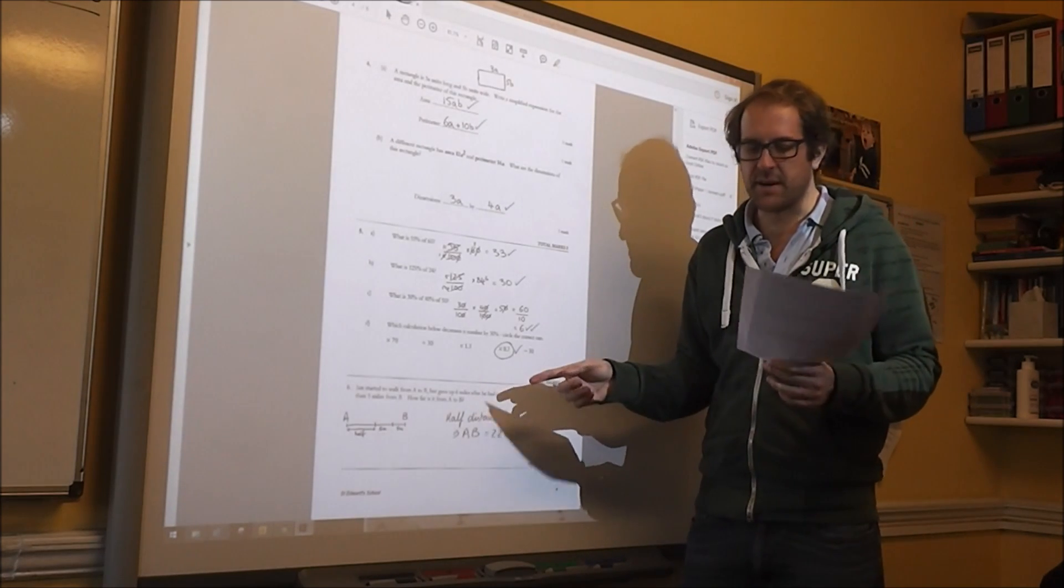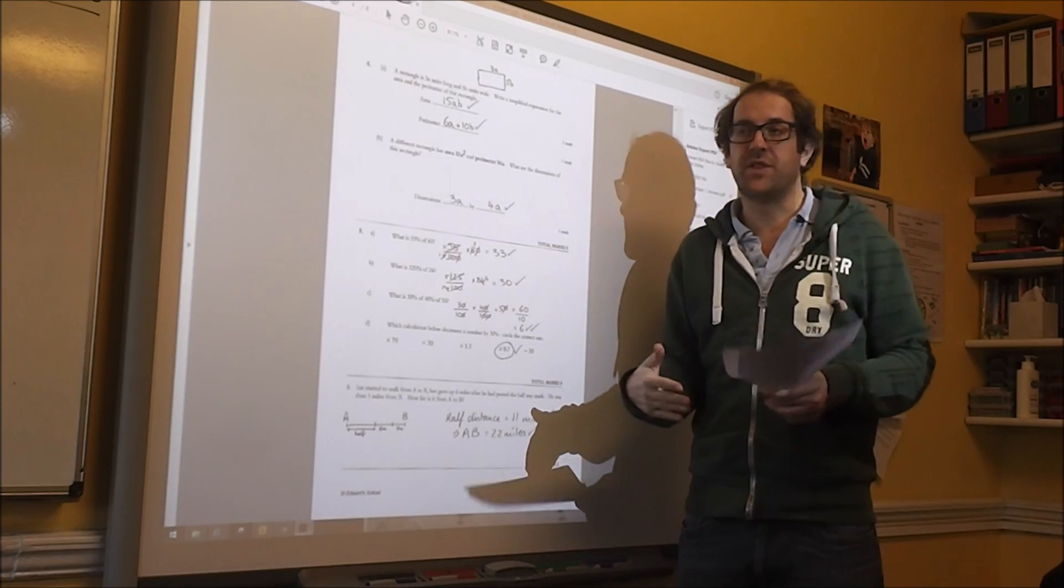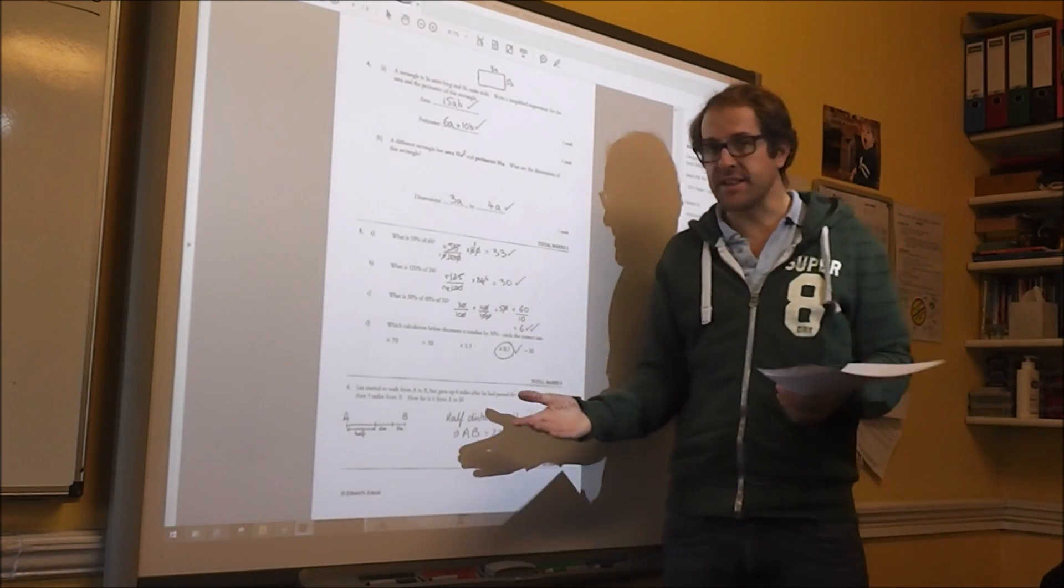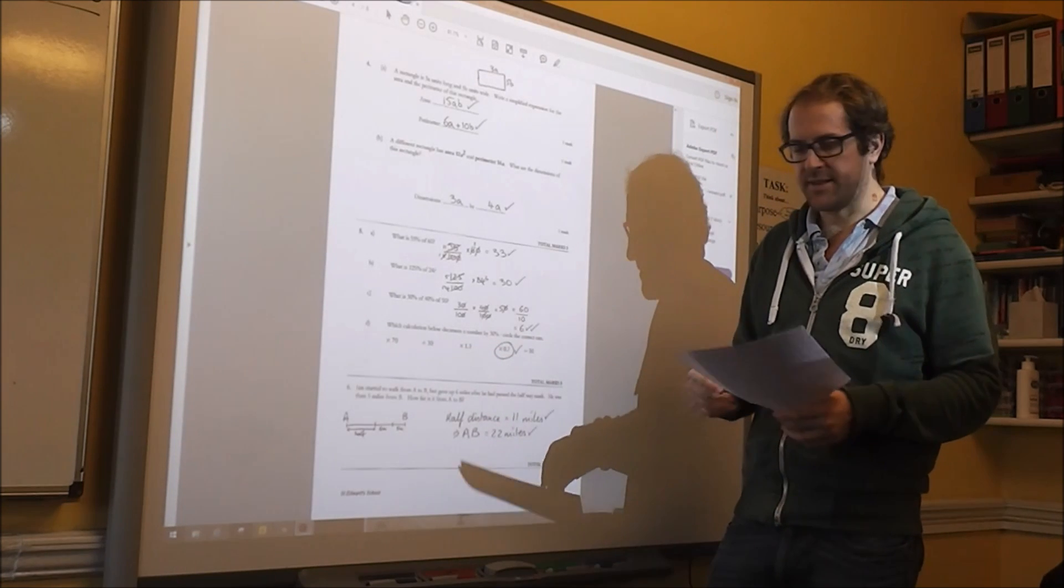Which calculator decreases the number by 30%? Well, if it's reduced by 30%, that means you've got 70% left. And the one of these equals 70% is 0.7.